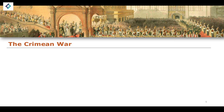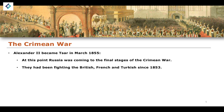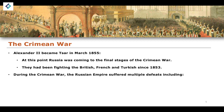In 1855 we also have the Crimean War. Alexander II would become czar in March of 1855, and at that point Russia was coming into the final stages of the Crimean War. The Crimean War was a bloody conflict fought between the British, the French, the Turkish, and the Russian Empire since 1853 — a relatively short conflict of a couple of years. During the Crimean War, the Russian Empire suffered multiple defeats, such as the Battle of Balaclava and the Battle of Inkerman.